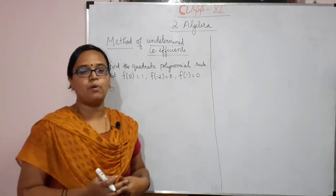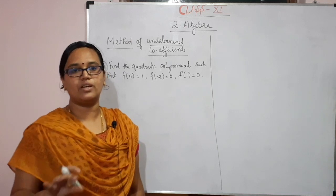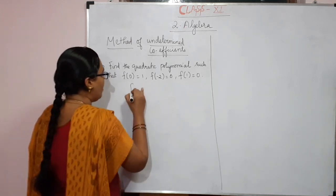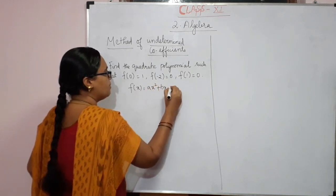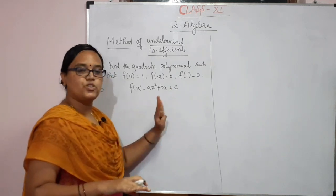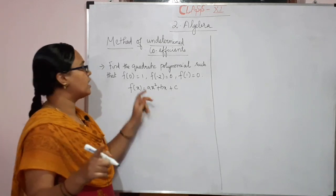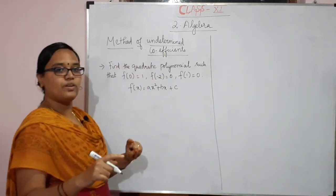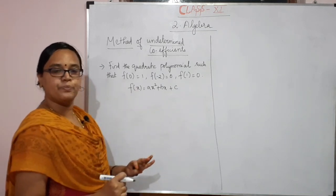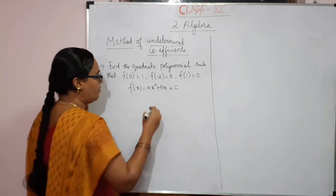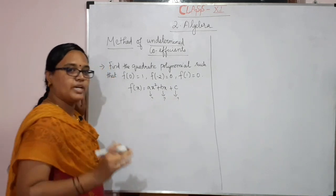What is the general expression of a quadratic polynomial? f(x) = ax squared plus bx plus c. This is the general expression. Using the method of undetermined coefficients, we look at the coefficients A, B, and C — three unknowns — and construct the polynomial.